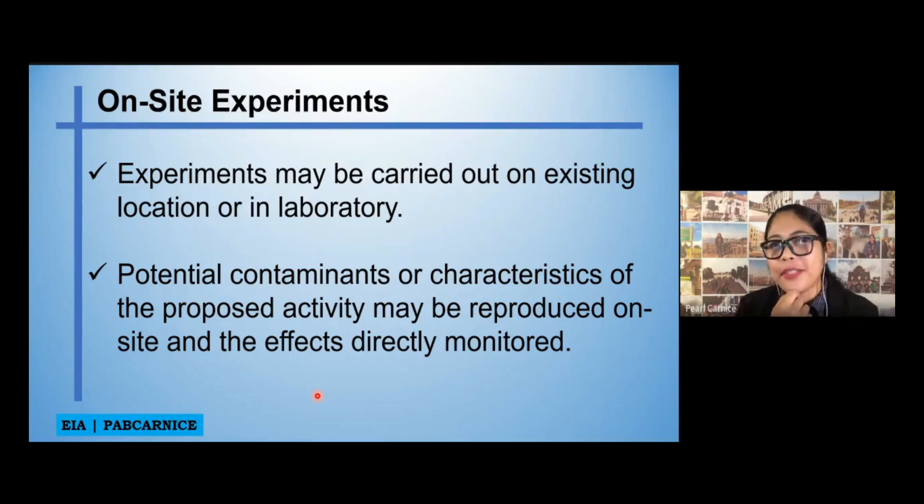Is it a prototype or I don't know exactly what's the name. When architects, when they have a design, they build it in a miniature. I forget the name of that. Anyhow, on-site experiments are more of applicable on projects that I would say that its impact are not well known yet. So they have to conduct on-site experiments. At the same time, it also involves potential contaminants or characteristics of the proposed activity that may be proposed on-site and the effects directly monitored. So again, this is more of on-site experiments are more of applicable on a project that its impact are not well known yet and that would involve contaminants or toxic chemicals, per se.